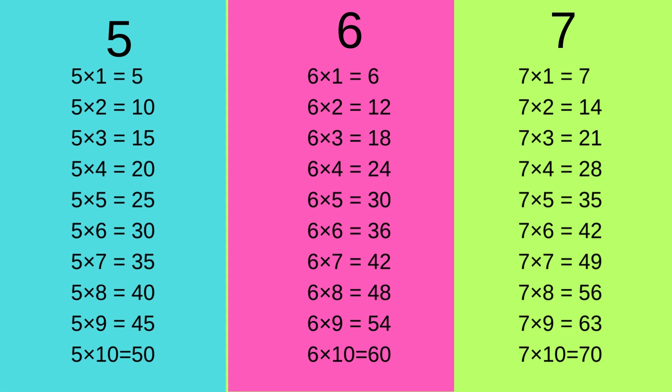So let's learn the table of 6. 6 1's are 6, 6 2's are 12, 6 3's are 18, 6 4's are 24, 6 5's are 30, 6 6's are 36, 6 7's are 42. Well done!